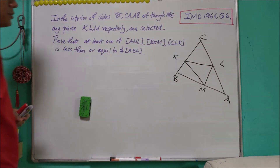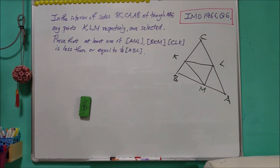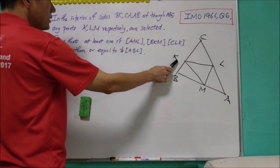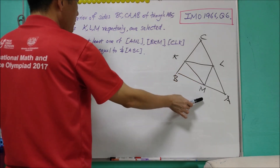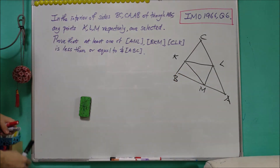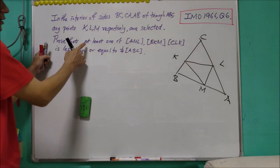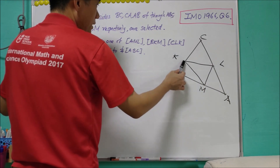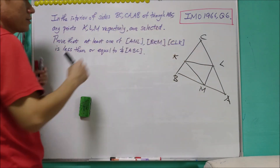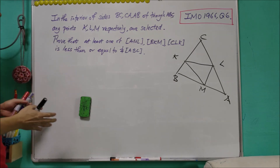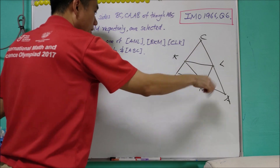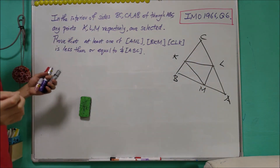This is a question from IMO 1996, Question 6. It is a geometric question: in an arbitrary triangle ABC, K is a point on BC, L on CA, and M on AB. We have to prove that at least one of the triangles AML, BKM, or CLK has area less than or equal to a quarter of the area of triangle ABC. How do you prove it?